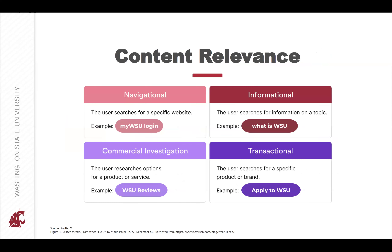The number one job in SEO is to ensure that you're offering relevant content, because Google's number one job is to show users relevant results. Relevance is much more than just showing a page about dogs when someone searches for 'dogs' — it's also about being concerned with a user's search intent, or the reason why they use a particular search query. There are four main types of search intent: navigational, informational, commercial, and transactional.